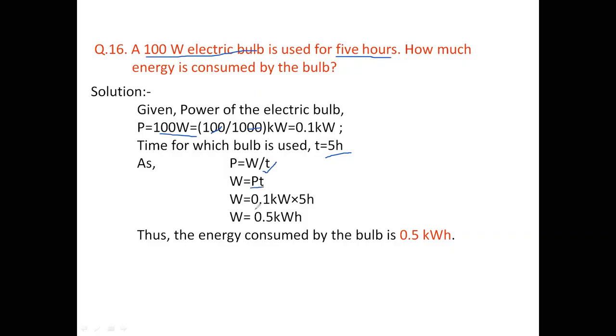So power is 0.1 kilowatt into 5 hours. Work done by that bulb is 0.5 kilowatt hour. Thus, the energy consumed is 0.5 kilowatt hour.